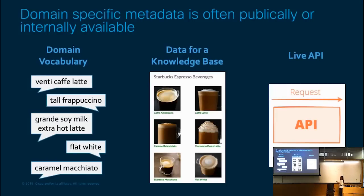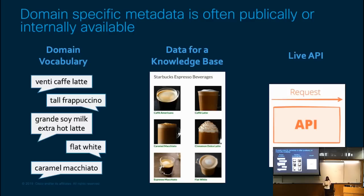The first set of data to collect is domain-specific metadata, which has three subcategories. The first is domain-specific vocabulary. Taking the Starbucks coffee ordering use case as an example, some domain-specific vocabulary includes words like frappuccino, macchiato, and venti — words that are very common in this domain but rare outside of it. Also, there are words like 'tall,' which means something different in the Starbucks domain than in general English. By collecting large amounts of this domain vocabulary, you can tailor your models for the specific language and data.